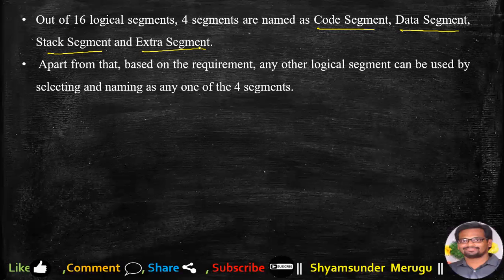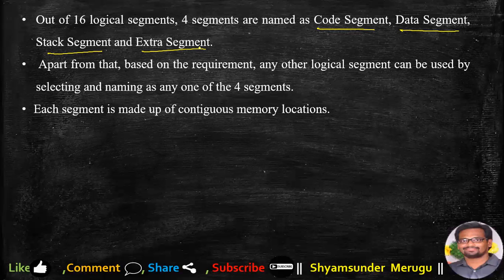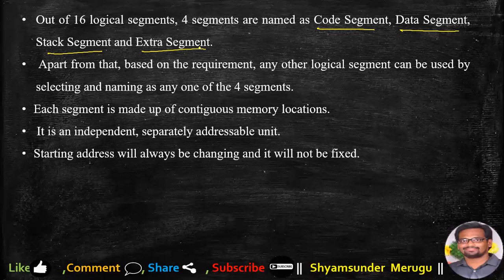In the same way, when working with a code segment of 64 KB and it is not sufficient, you can select any of the remaining segments, name it as a code segment, and use it for your purpose. Based on your requirement, you can choose any segment and name it. Each segment is made up of contiguous memory locations, is independent, separately addressable, and unique. The starting addresses are not fixed — they will always be changing.